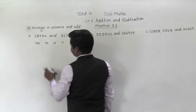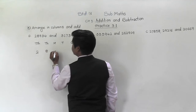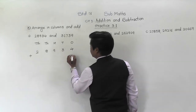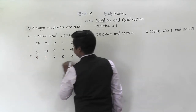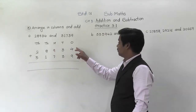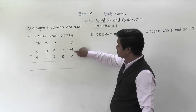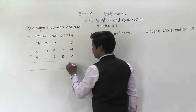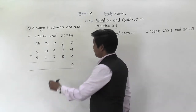Let us arrange these digits according to the places in the column: 28,934 plus 31,739. Let us add them. 4 plus 9 is 13 — 3 will come down, 1 will be carried. 3 plus 3 is 6, and 6 plus 1 is 7.